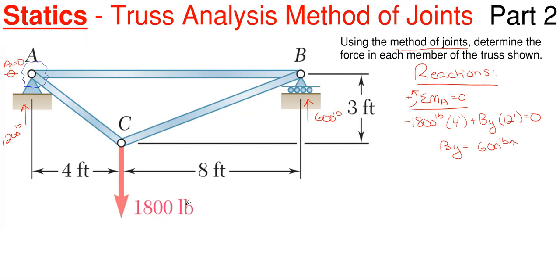So starting at point A, what I have here is I have an unknown horizontal member, and I have an unknown diagonal. A diagonal will always consist of a vertical and a horizontal force. So can I solve for anything here? Well, I have two unknown horizontal forces and one unknown vertical force. Well, looking at A, what I have here is I have 1,200 pounds upward.